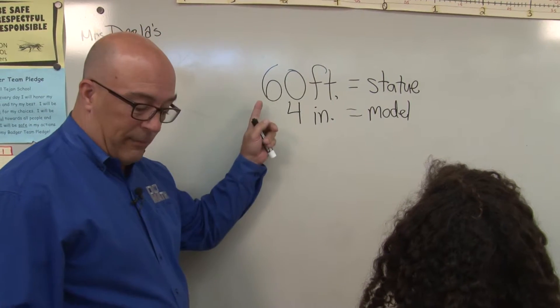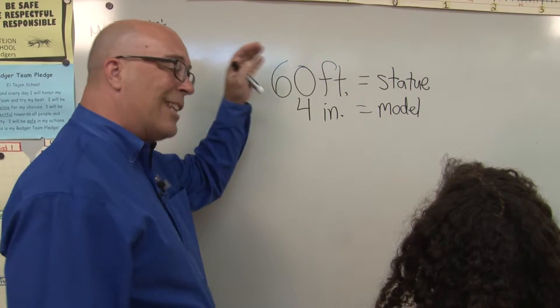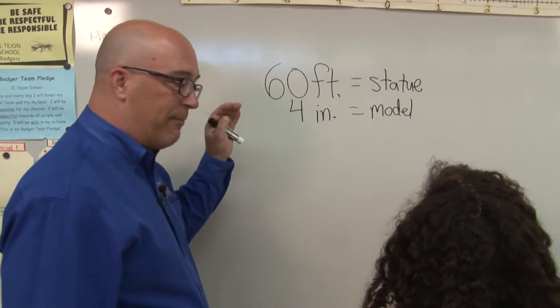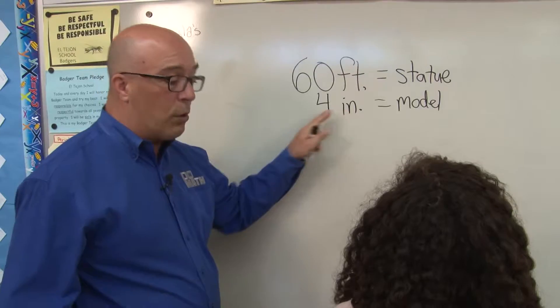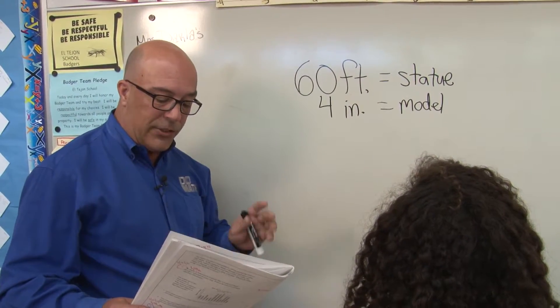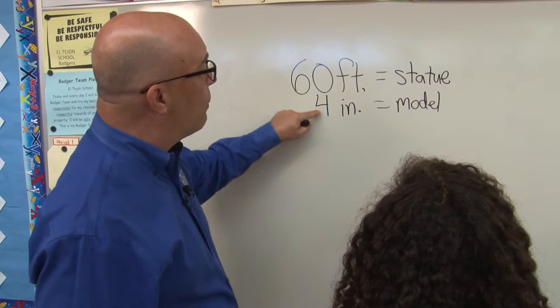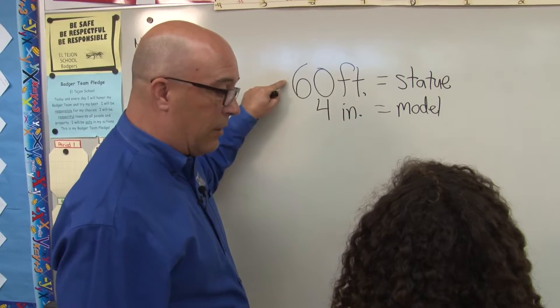A statue of Abraham Lincoln in the Lincoln Memorial has a height of 60 feet. So that statue of Abraham Lincoln is 60 feet. They built a scale model of it. The model is only 4 inches. Okay? We want to know how many feet of the statue is equal to 1 inch. So if 4 inches is equal to 60 feet, we want to know how many feet is represented by 1 inch. Okay?